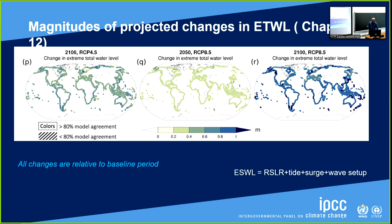In chapter 12, we have magnitudes of projected change in extreme total water level — one of our main figures in section 12.4. We have two scenarios, RCP4.5 and RCP8.5, and projections for 2050 and 2100. Comparing RCP8.5 for mid-century and end-century, by mid-century the projected increases are around 0.2 to 0.4 meters. By 2100, the increases are around one meter. All of these changes are relative to a baseline period at the beginning of this century.